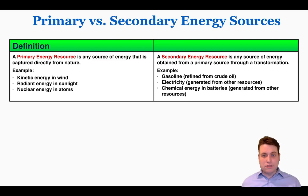As an example, kinetic energy from wind is captured by turbines, so that would be an example of a primary energy resource. It hasn't been modified by humans at that point; it's just taken directly from nature.